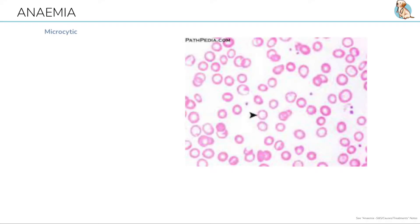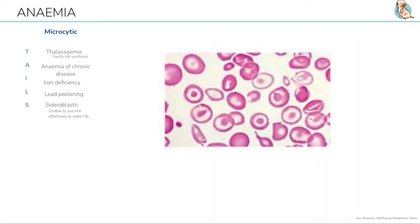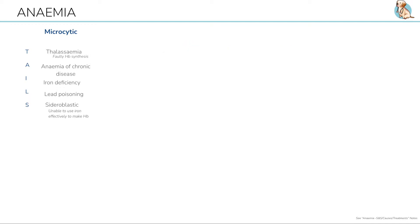Firstly, microcytic anemia. A smaller red blood cell volume occurs when there is decreased haemoglobin production. The mnemonic to remember is TAILS: T for thalassemia, when there is faulty haemoglobin synthesis, A for anemia of chronic disease.